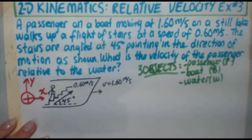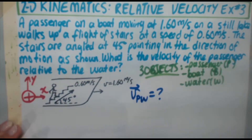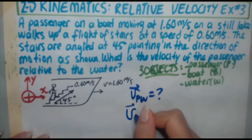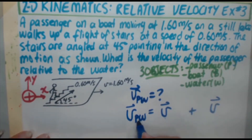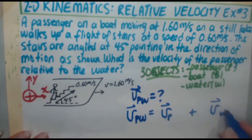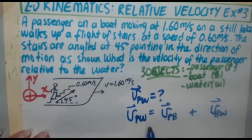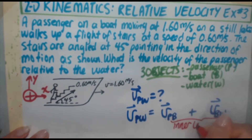What we're looking for is V-P-W, the velocity of the passenger relative to the water. From the earlier videos, to construct the expression, V-P-W equals two velocities. The first subscript of the first V is P, and the last subscript of the second V is W. The missing link in between is B. So we have V-P-B plus V-B-W — the velocity of the passenger relative to the boat, plus the boat relative to the water. The inner letters need to match in order to cancel, leaving the outside two letters.